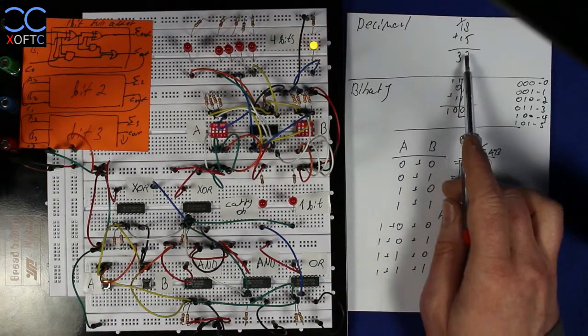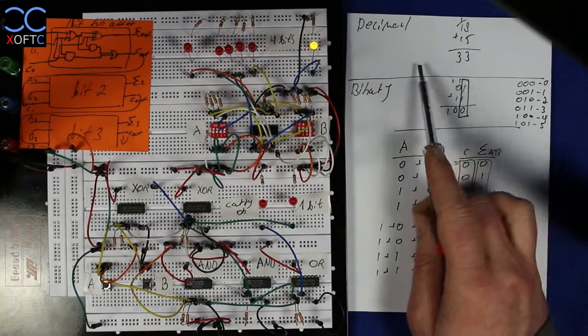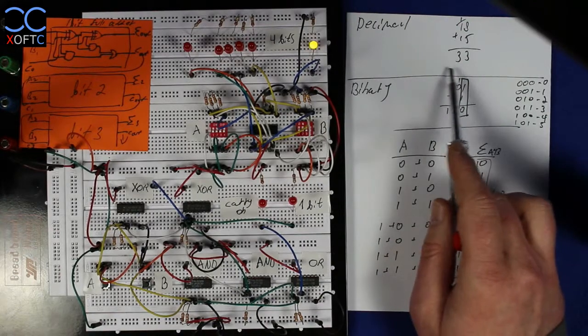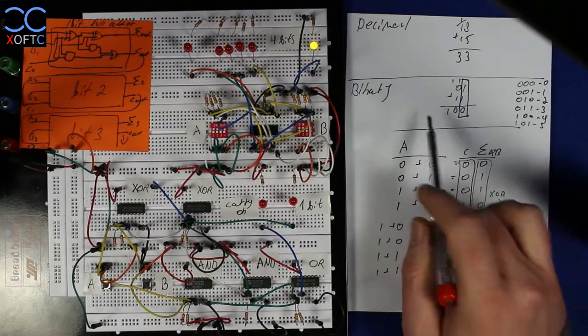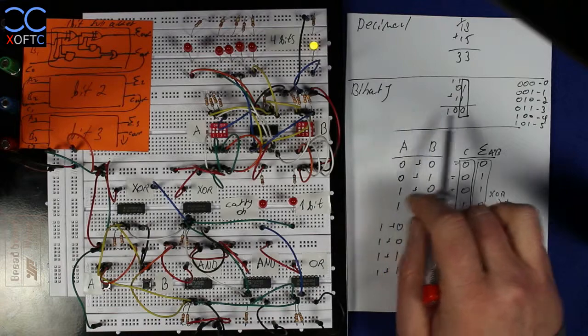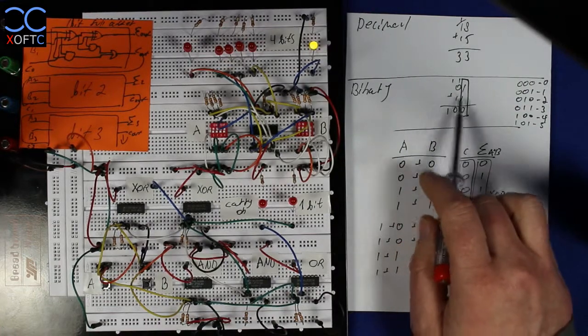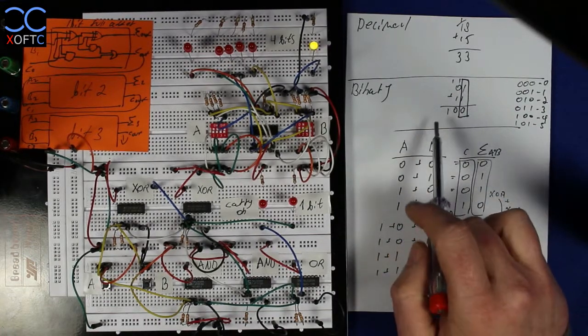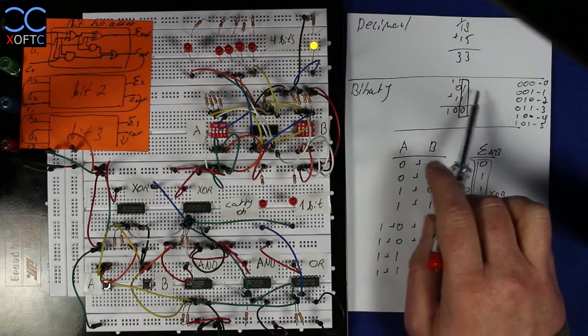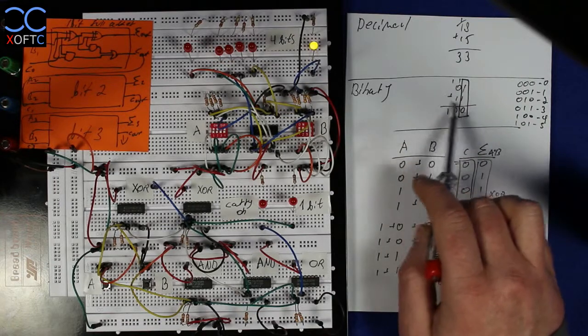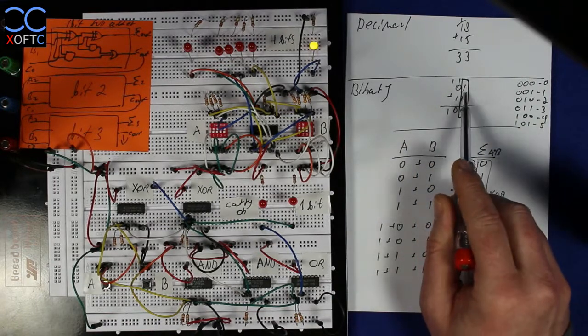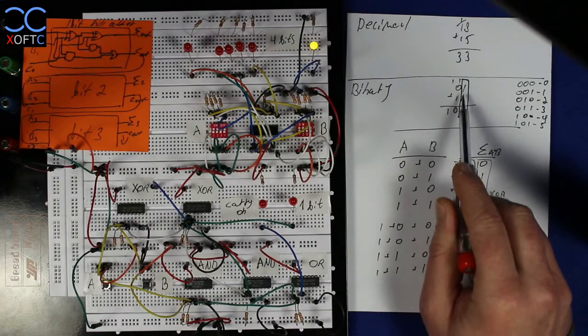Binary adding works the same way. Only instead of using a 10-base number system from 0 to 9, we only have two numbers, 0 to 1. And we're using them to add the values together. Here I have two numbers. I have a 1 and a 3, and I want to add them together.